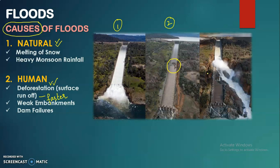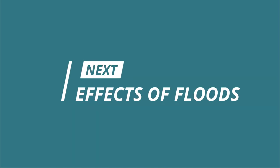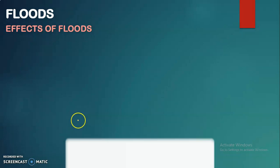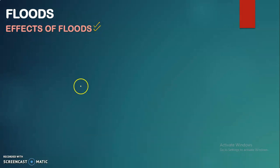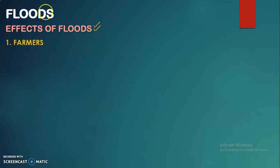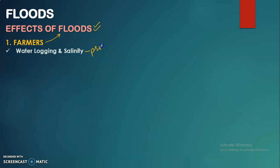The next topic is the effects of floods. When floods are generated, they create certain effects on people, land, and the environment. Farmers are the first group affected. The first problem for farmers is water logging and salinity, which is a major problem created by floods. Let me explain what water logging and salinity mean.